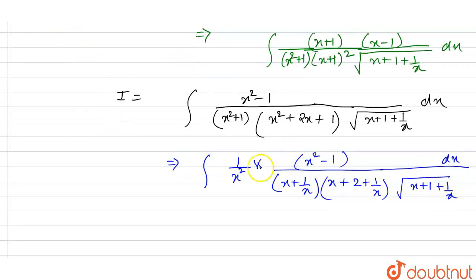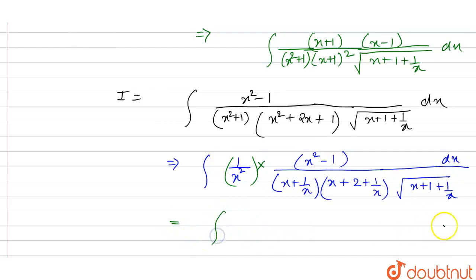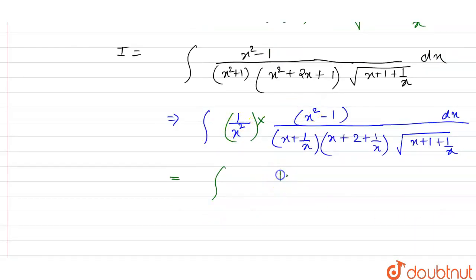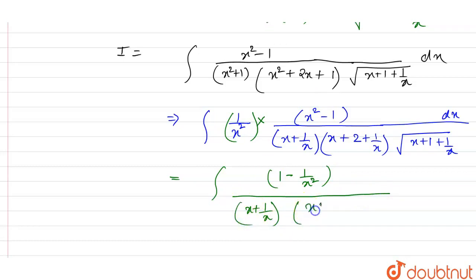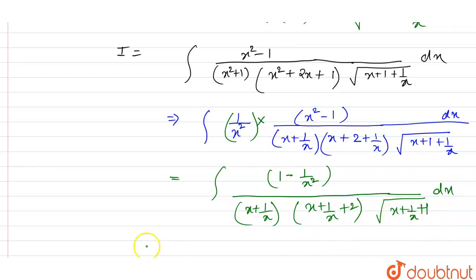So now we are just dividing — this sign is multiplication. Now we are dividing this 1 by x squared in the numerator. So we have the integral: x squared divided by x squared is 1 minus 1 by x squared. And now in the denominator, we have the term as x plus 1 by x, and x plus 1 by x plus 2. And we have under root of x plus 1 by x plus 1, with respect to dx here.